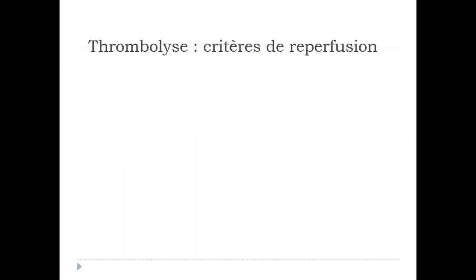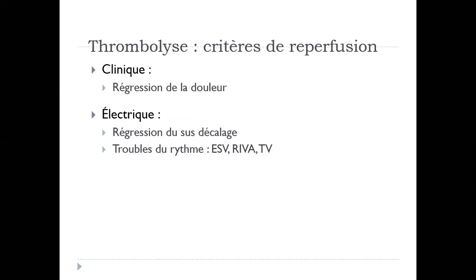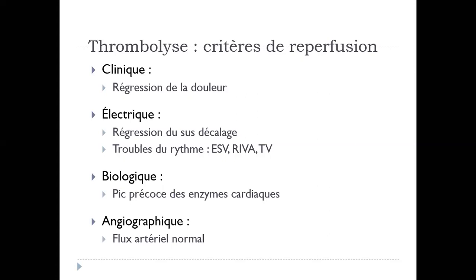Si le patient est thrombolysé, quand est-ce qu'on dit que le caillot a été dissous et qu'on a une reperfusion myocardique ? On parlera de critères de succès de la thrombolyse. Clinique : c'est la régression de la douleur. Électrique : c'est la régression du sus-décalage de plus de 50% et l'apparition d'un trouble du rythme type RIVA, rythme idioventriculaire accéléré, du crédit ventriculaire à 80 battements par minute. Biologique : c'est un pic précoce d'enzyme cardiaque. Angiographique : lorsqu'on fait la coronagraphie, on va trouver un flux artériel normal. Ces quatre critères sont les critères de succès de la thrombolyse.